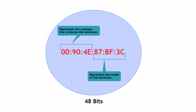Importantly, the manufacturer portion cannot be changed, but can be manipulated. The last three octets represent the model of the hardware. MAC addresses consist of 48 bits in total, i.e. 6 bytes.